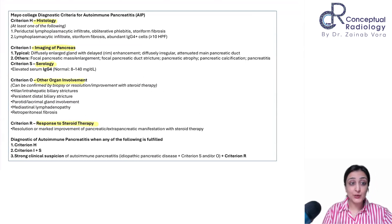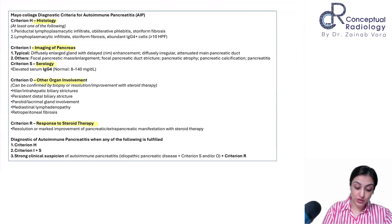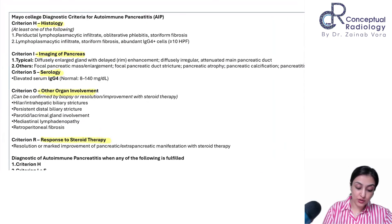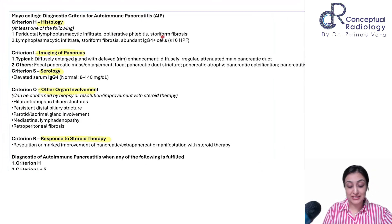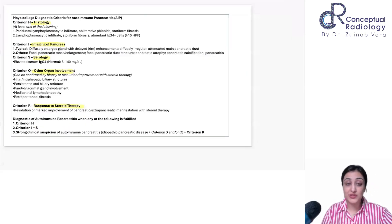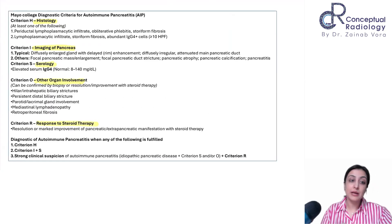Starting with histology: you want lymphoplasmacytic infiltration and storiform fibrosis with IgG4 plasma cells.